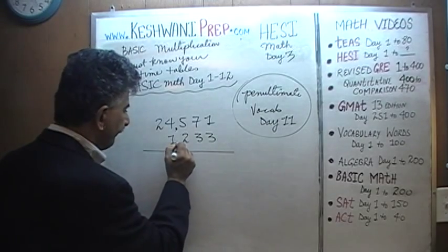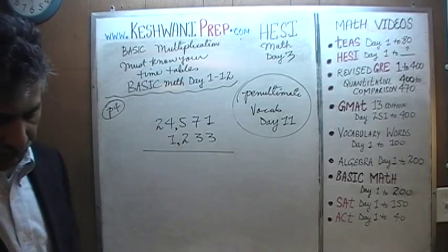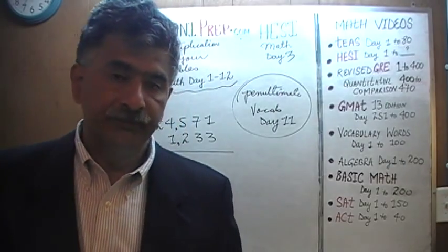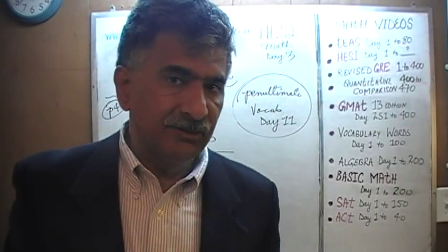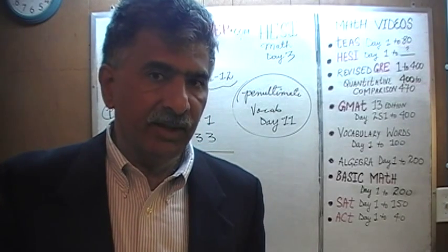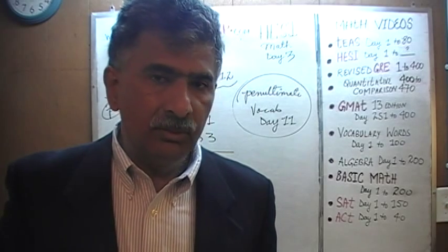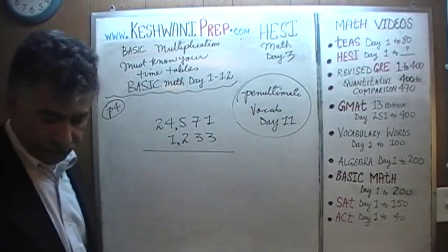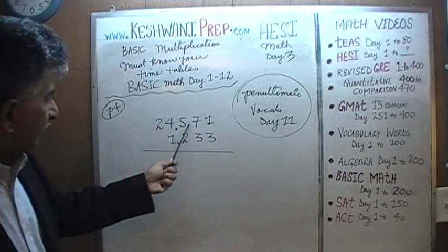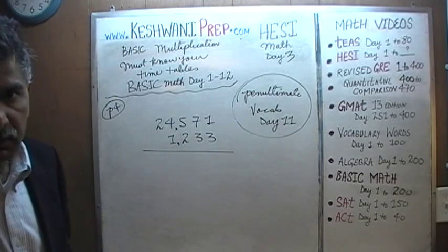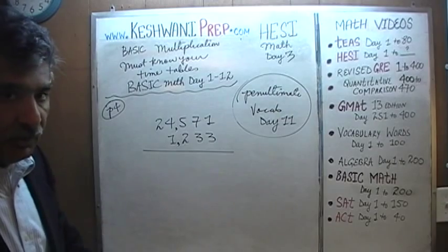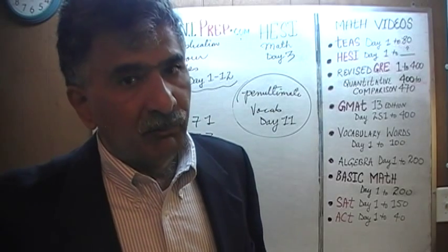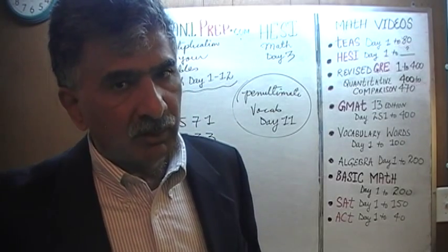Now listen very carefully. This exam that you are preparing for, as you know, is a multiple choice exam. And just like any other multiple choice exam, it has certain weaknesses. One of the weaknesses of a multiple choice exam is that, depending on how the answer choices are laid out, you can minimize the amount of work you put into a given problem. For example, with 24,571 times 1,233, we don't actually have to do out the entire problem. The answer choices give you 4 options and they are usually very far apart. If you can approximate, if you can estimate, you can save yourself a great deal of time.